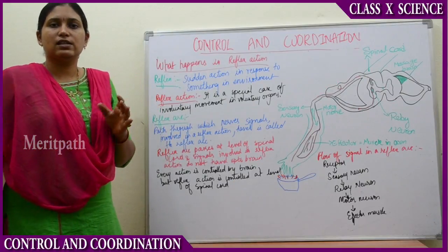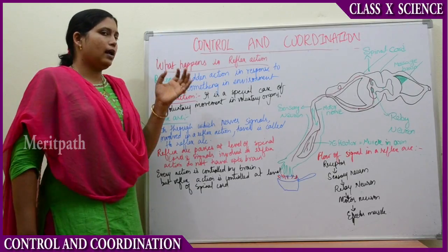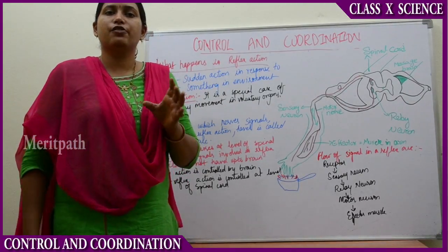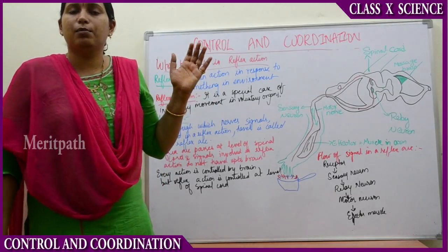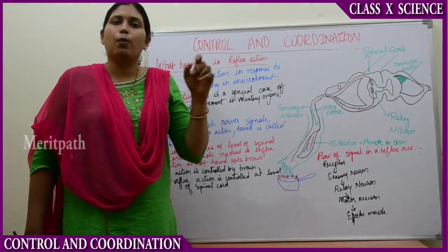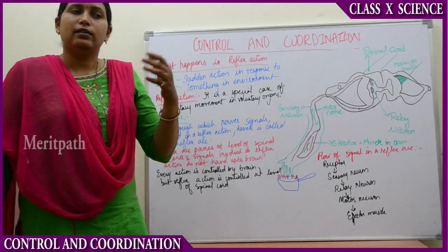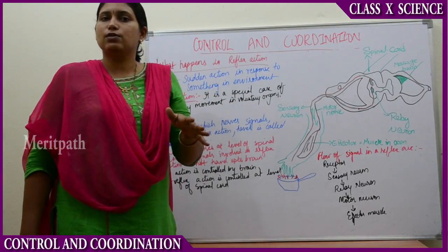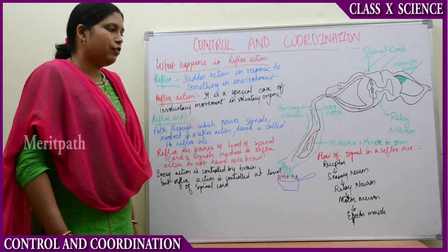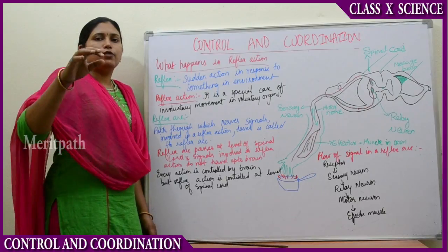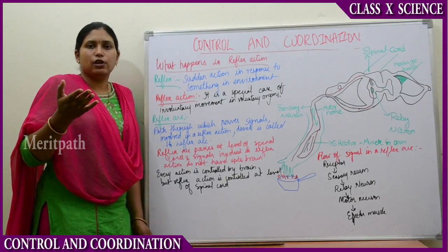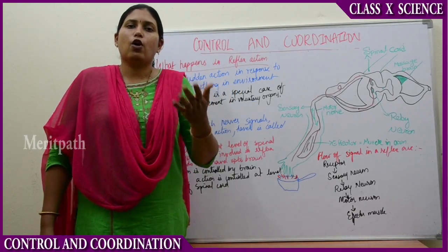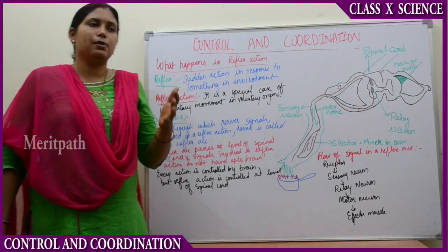We are talking about the nervous system in animals. The next topic is what happens in a reflex action. Reflex action occurs in both human beings and animals. What is a reflex action? If we touch a hot iron, we immediately remove our hand. If we put our hand in boiling water, we immediately remove it. If we are fond of biryani, just hearing the word makes our mouth water — that is also reflex action. We all know Pavlov's dog experiment: Pavlov rang a bell whenever he gave food, and eventually just ringing the bell made the dog's mouth water — those are all examples of reflex actions.